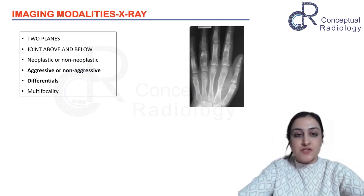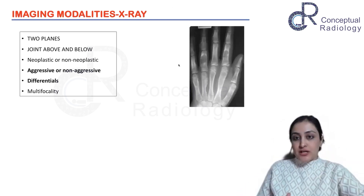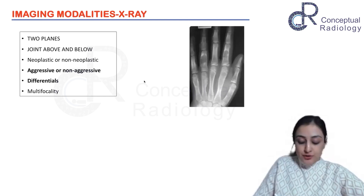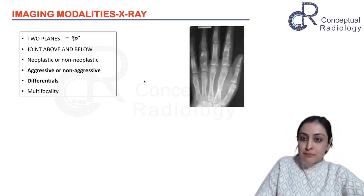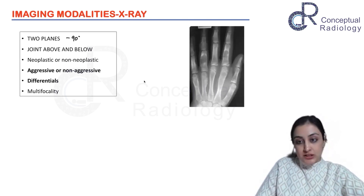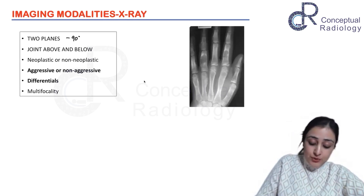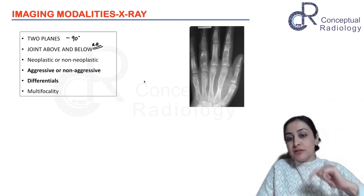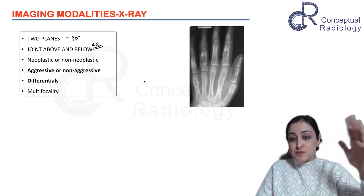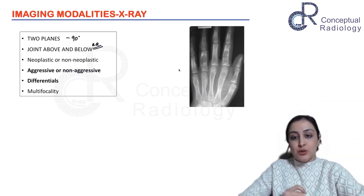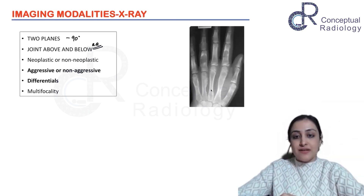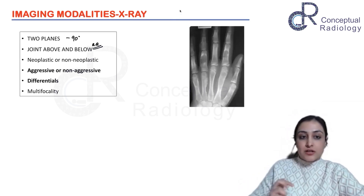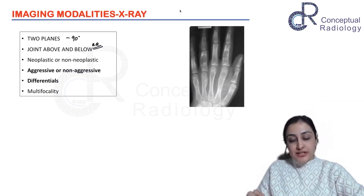Regarding the role of a radiograph in bone tumors: two planes are used, and these two planes must be perpendicular — 90 degrees to one another. One very important and testable point is that you must include one joint above and below wherever the tumor is suspected.